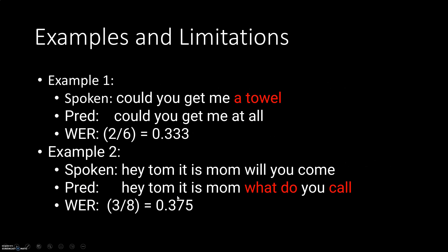Let's look at some examples. Say we have a spoken sentence: 'Could you get me a towel?' The ASR system transcribes it as 'Could you get me at all.' If we align these two, everything is the same up to 'me', but then 'a' is substituted by 'at' and 'towel' is substituted by 'all'. So we have two substitutions. The total number of errors is two, and we divide that by the total number of words in the reference sentence to get the word error rate.